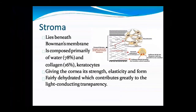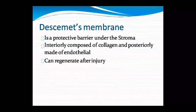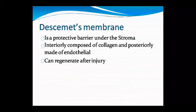The next structure is Descemet's membrane, which is a protective barrier. It is anteriorly collagenous and posteriorly lined by endothelial cells. After injury, unlike Bowman's membrane, it will regenerate. We learned that Bowman's membrane may not be regenerated, but Descemet's membrane can be regenerated.